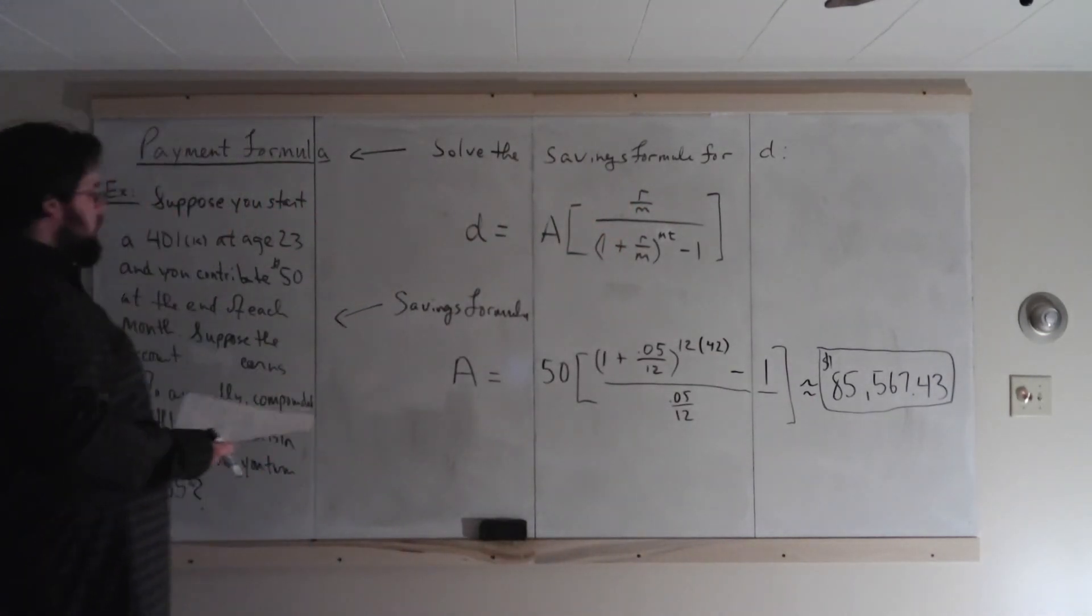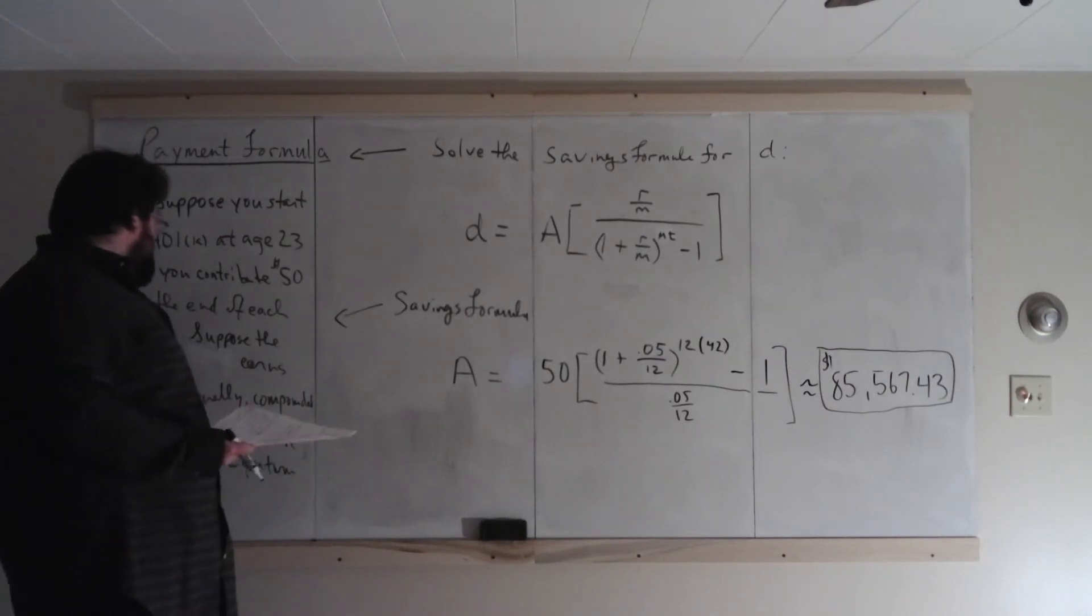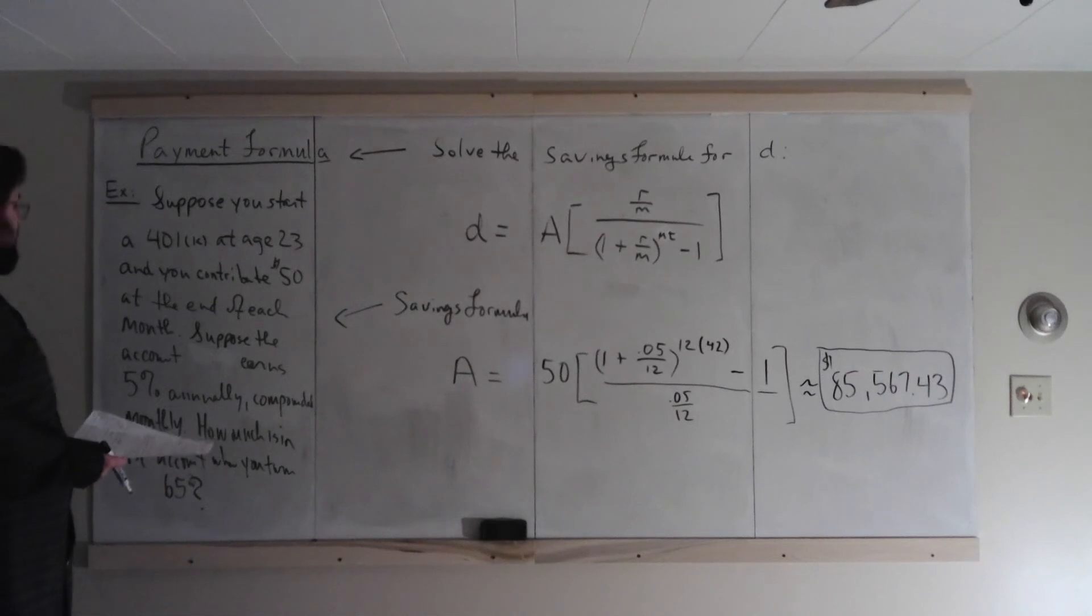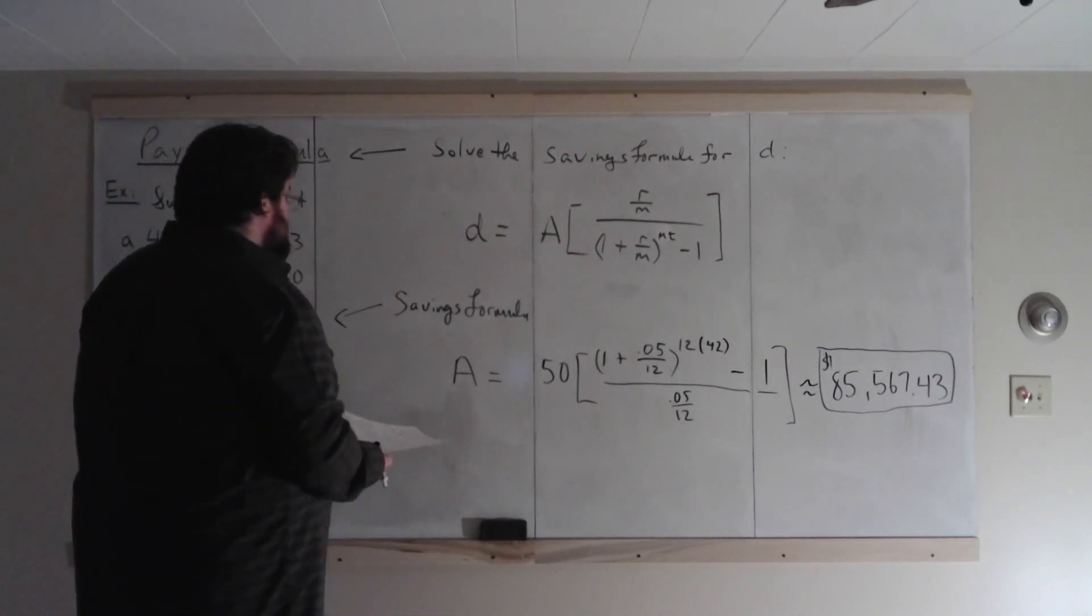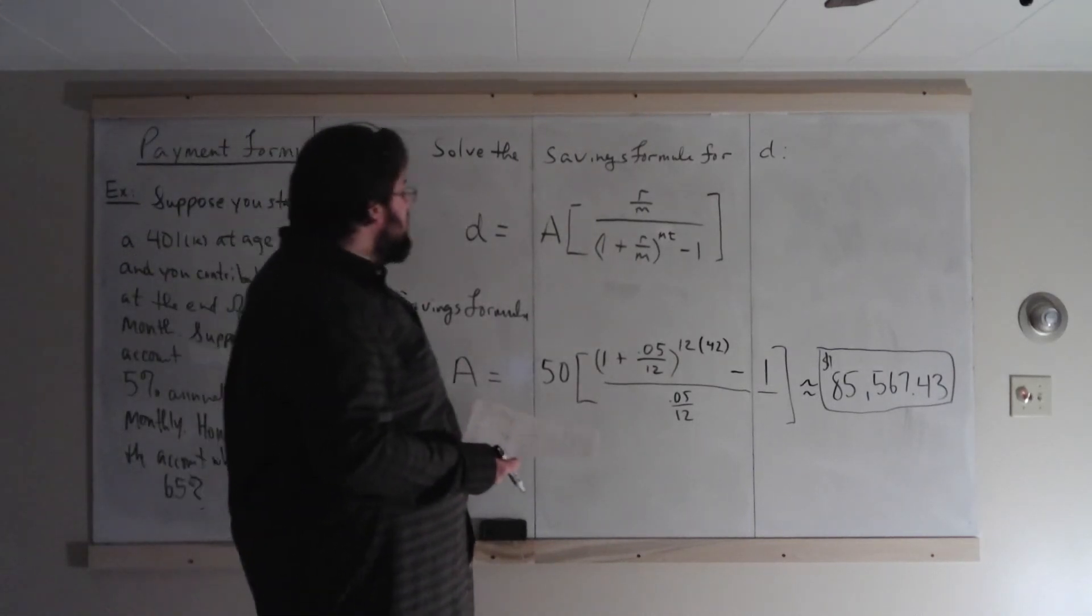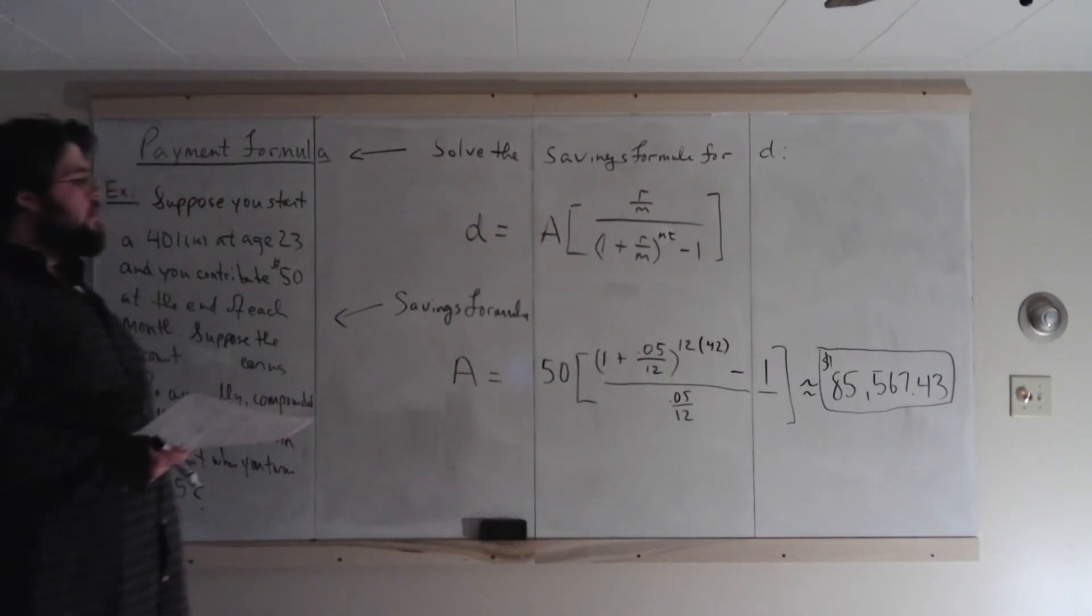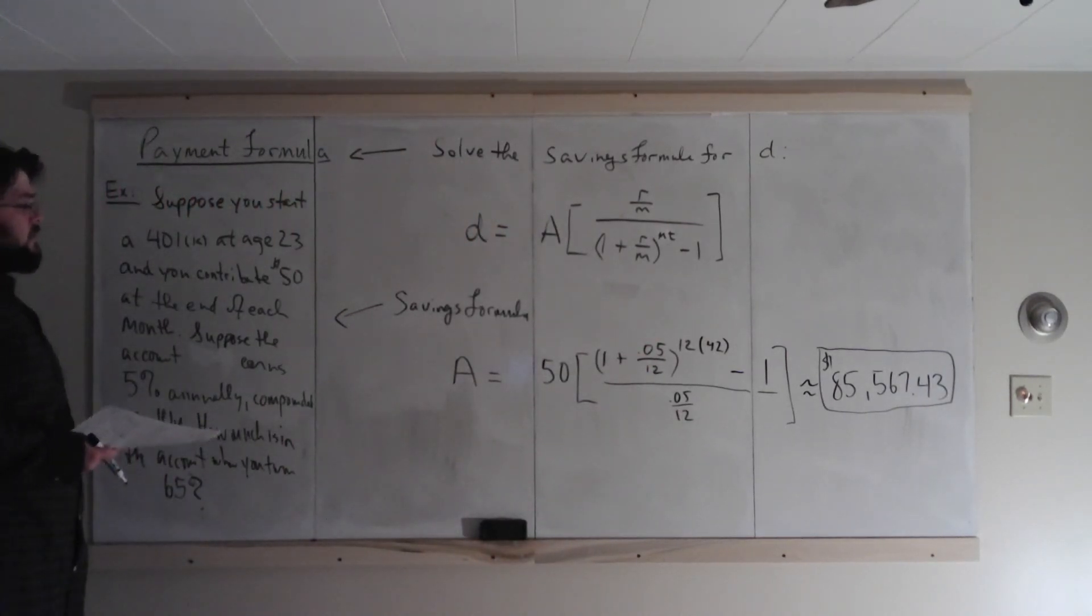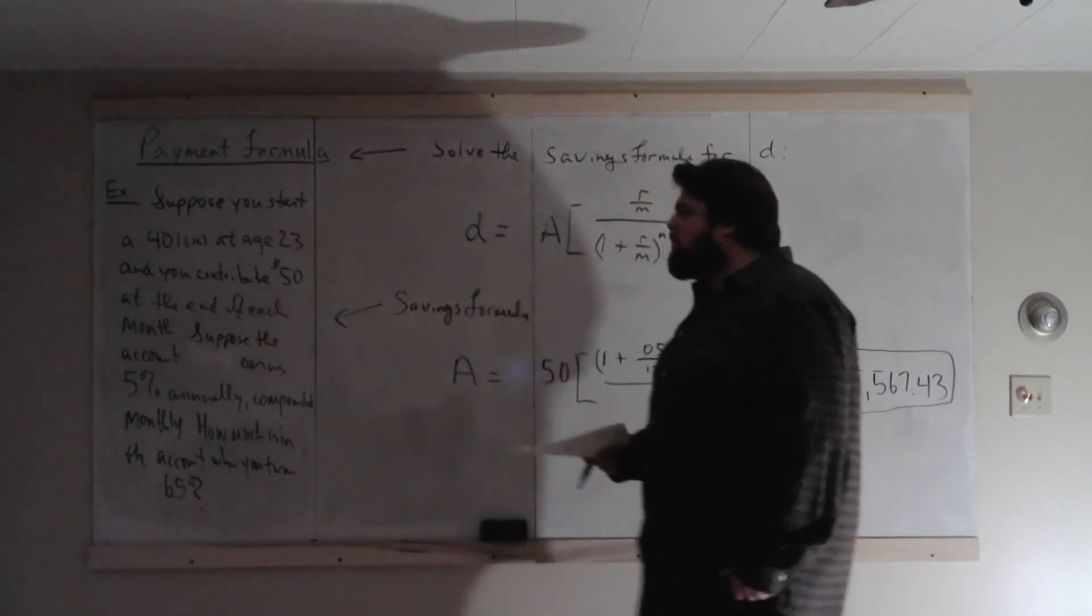So $50 a month for 42 years, $85,000, not a bad interest rate, I think. I would be surprised if you could find accounts like that that are that guaranteed, although I'm not a finance guru. But it sounds like a pretty high rate for right now. But $50 a month for 42 years, how much are you actually depositing?